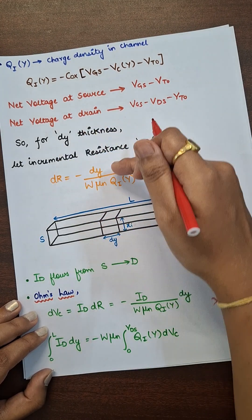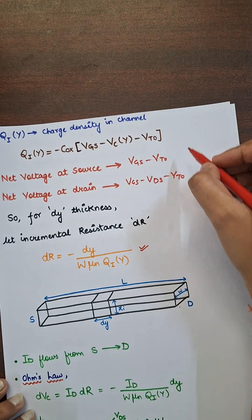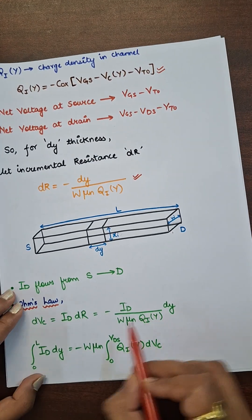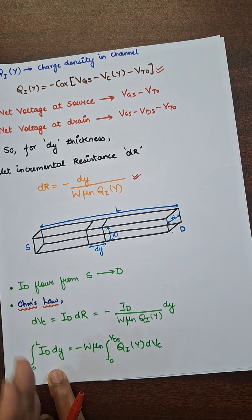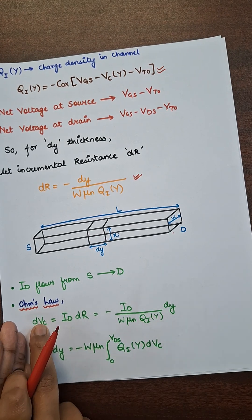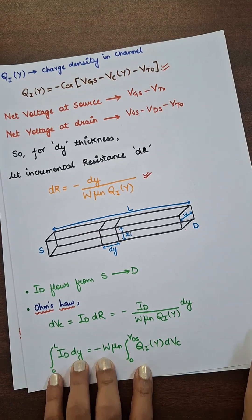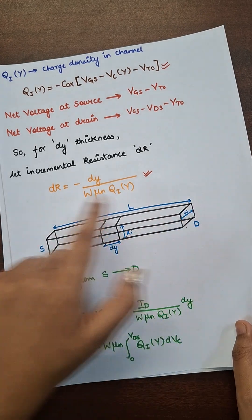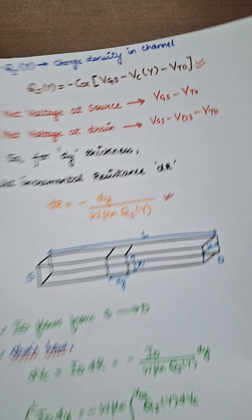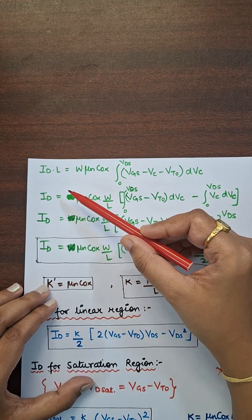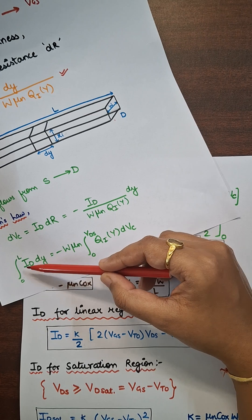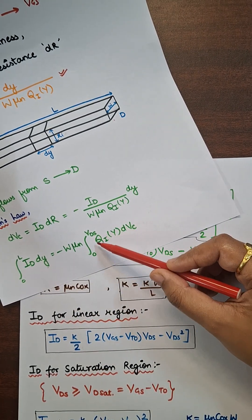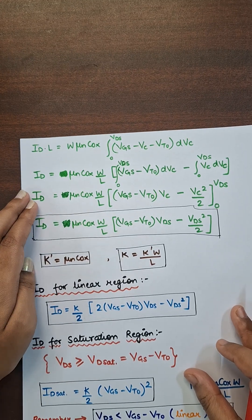Substituting the formula for dR into the equation, we get an expression for dVC. Moving ID and dy to the left-hand side and cross-multiplying the denominator terms with dVC, we apply integration on both sides — from 0 to L on the left, and from 0 to VDS on the right. The integration gives ID times L on the left side, and on the right we substitute the value of QIY.